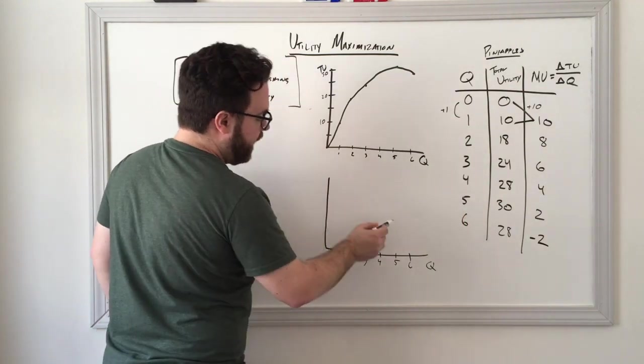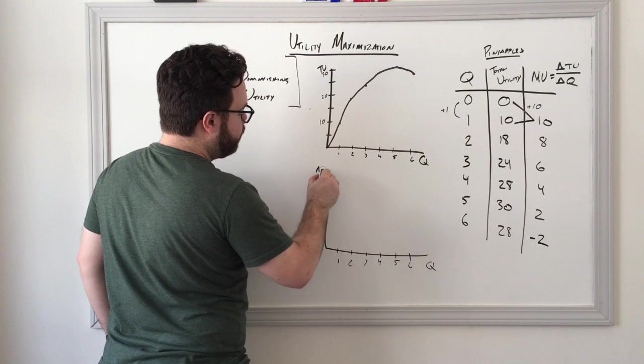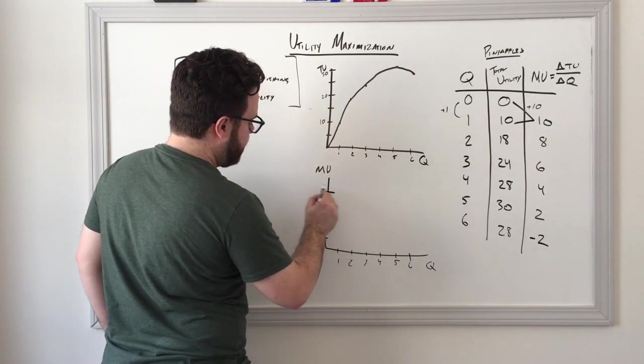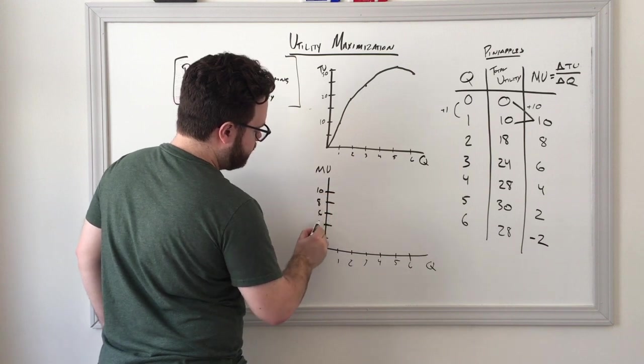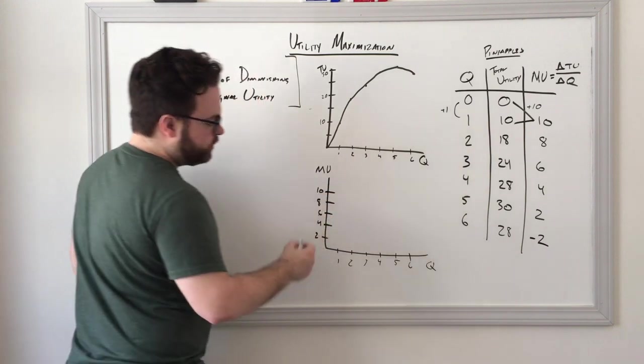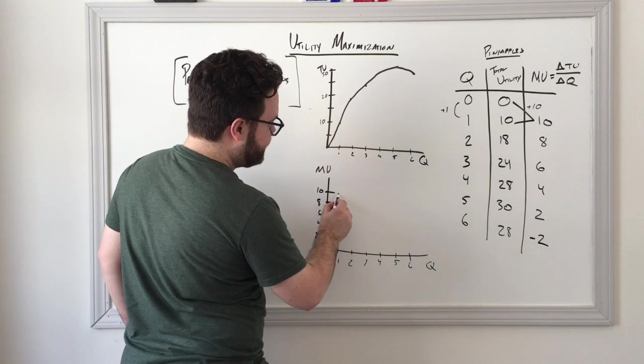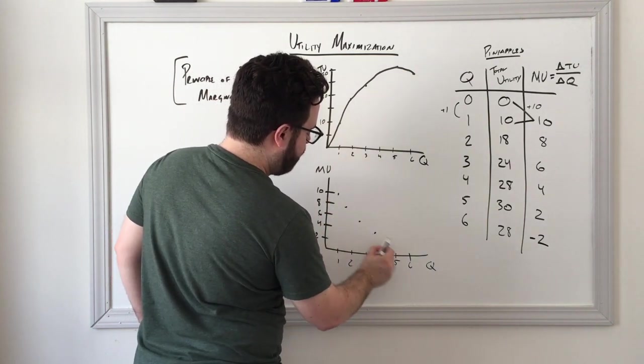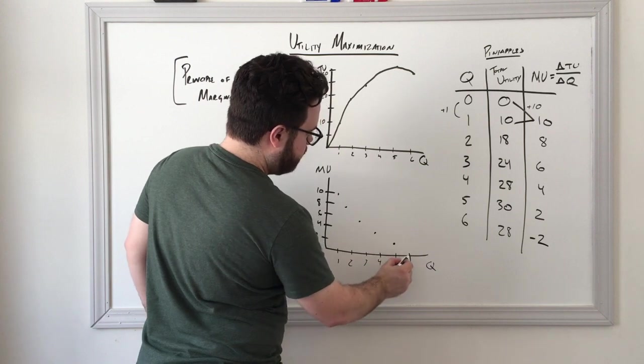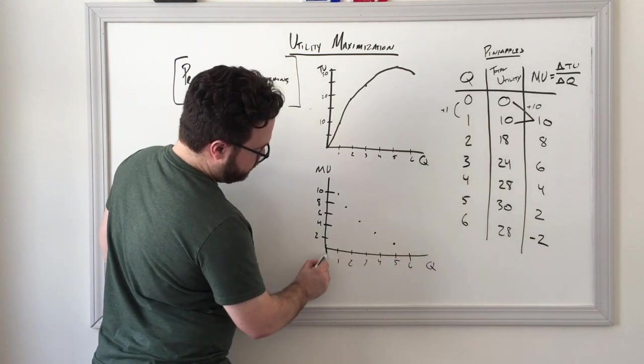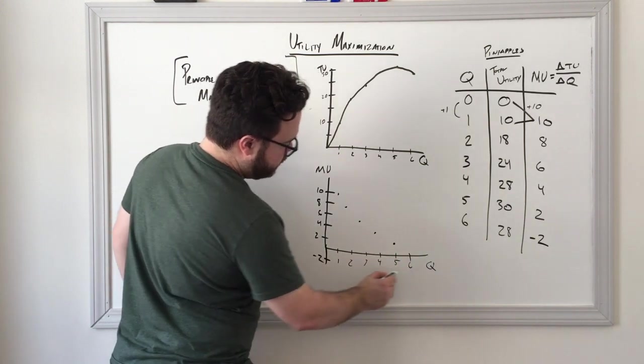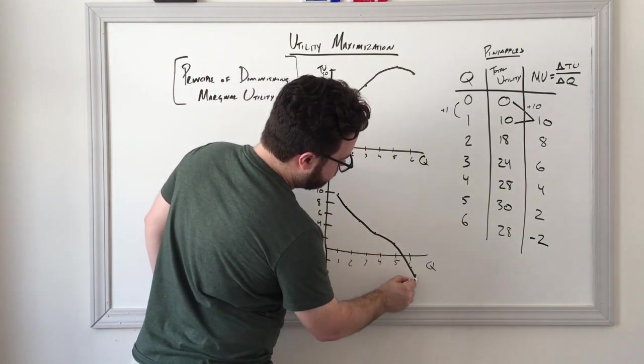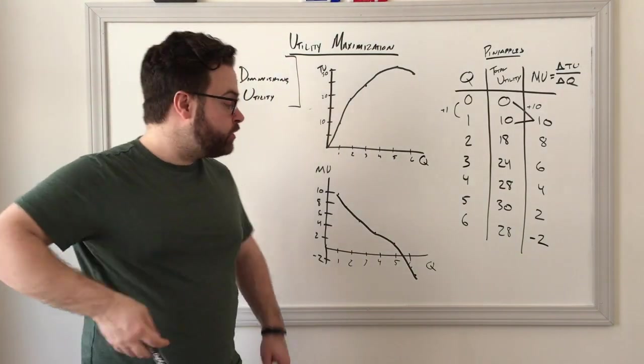And so if we were to graph, instead of total utility, we were to graph marginal utility, and this time we only need to go two, four, six, eight, ten. We would see that the marginal utility is initially high, and then it starts coming down until the point where actually we need to extend our graph, negative.